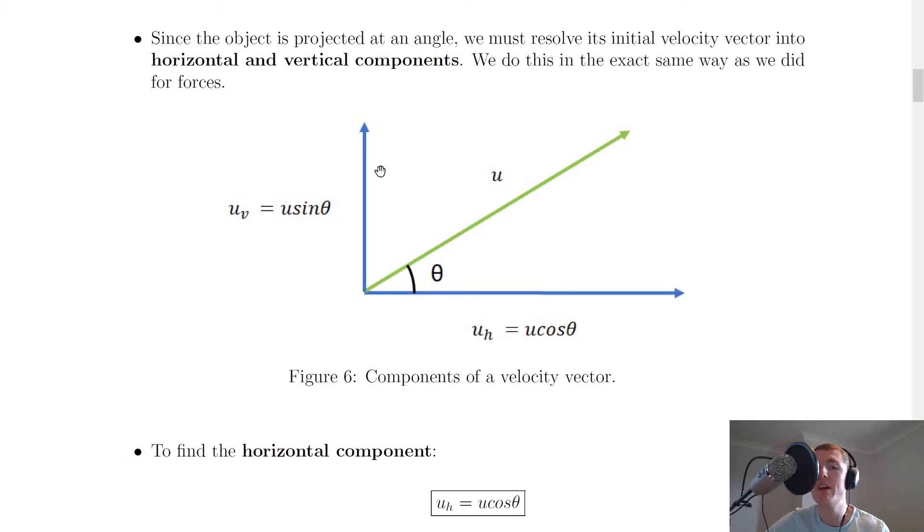And we could do a similar thing for the vertical component using sine this time. Sine theta equals opposite over the hypotenuse and rearranging for the vertical component here, we could get u_v equals u sine theta where u_v is just your subscript for the vertical component of the initial velocity. And remember like we said for forces, a way to remember which one is cosine and which one is sine is that cos goes across and then sine is going to be the other one, the vertical one.